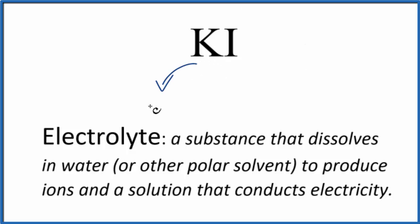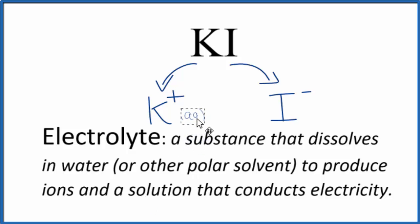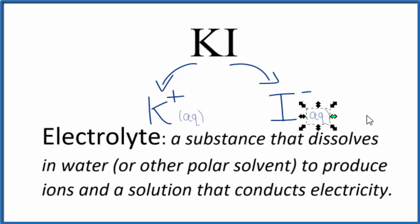We'll get the potassium ion, which is K+. Potassium is in group 1 on the periodic table and has a 1+ charge. And then the iodide ion, that's I−, which has a 1− charge. Since they've dissolved in water, we're going to put a little 'aq' after them — that's aqueous, meaning dissolved in water.